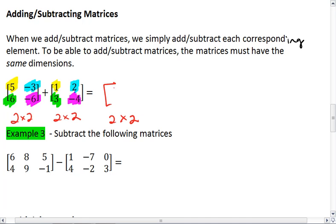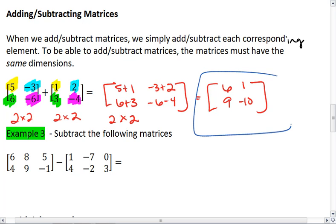We do 5 plus 1, negative 3 plus 2, 6 plus 3, and negative 6 minus 4. Which gives us 6, 1, 9, negative 10. And that is our final answer.